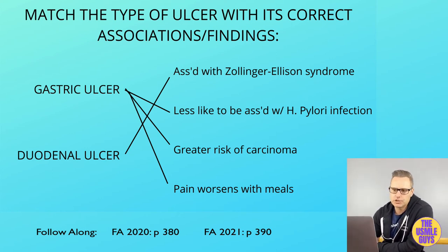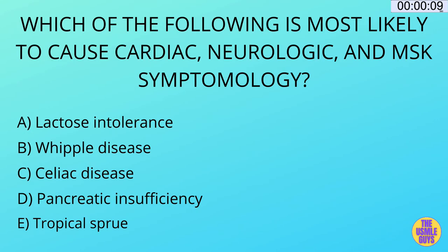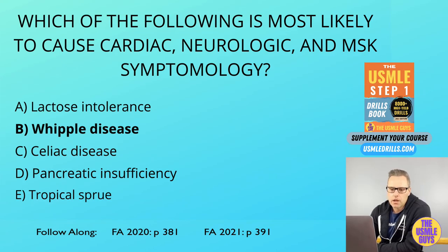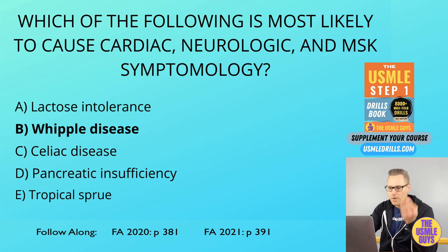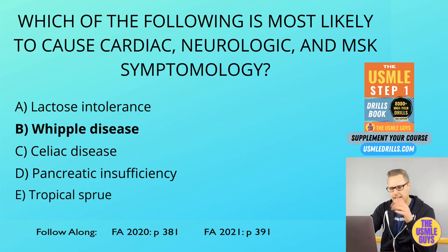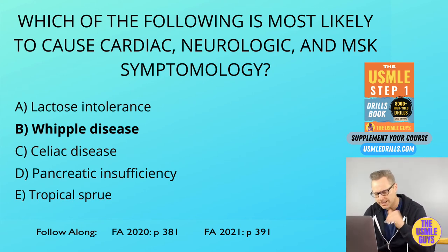Let's move on to the next question — a multiple choice. The correct answer here is B. We need to talk about malabsorption syndromes. You want to consider things like celiac disease, lactose intolerance, pancreatic insufficiency, tropical sprue, and Whipple disease any time you see a vignette that sounds like malabsorption.